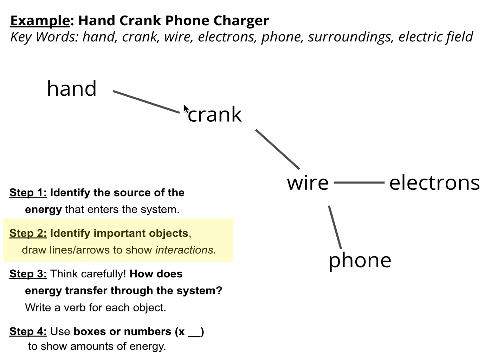I know that the hand touches the crank and the wire is attached to the crank and there's electrons in the wire and the phone is kind of, I guess I could draw a connection between electrons and phone. Truth is, I'm not sure exactly how to use this electrons yet, but I'm getting started by identifying objects and interactions.